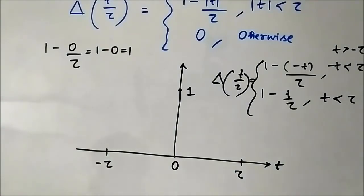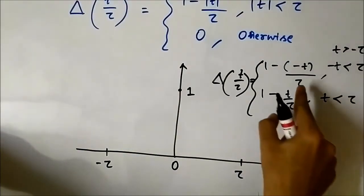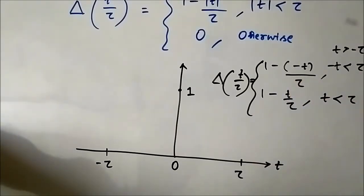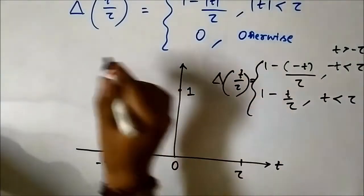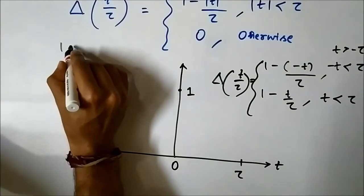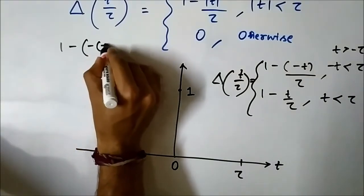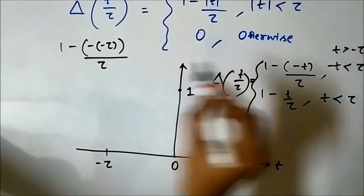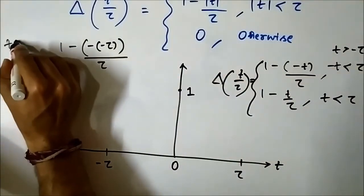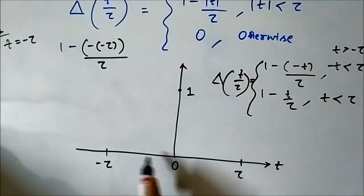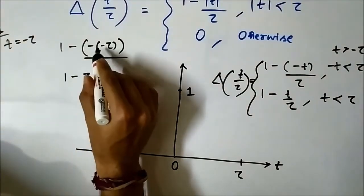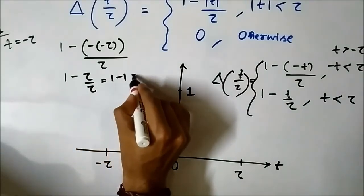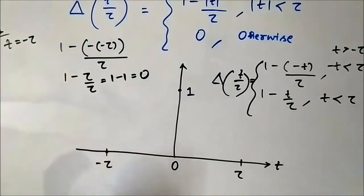At t equals minus τ, since this is less than 0, the equation 1 minus (−t/τ) applies. Substituting t equals minus τ gives 1 minus (−(−τ)/τ) = 1 minus τ/τ = 1 minus 1 = 0. So at t equals minus τ, the value is 0.